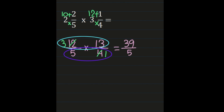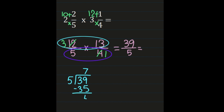So now I'm at 39/5. If you can leave your answer as an improper fraction you are done. Most of us will need to turn this into a mixed number by dividing 39 by 5: 39 divided by 5 is 7, 7 times 5 is 35, and 39 minus 35 gives a remainder of 4. The quotient of 7 becomes our whole number, the remainder 4 becomes our numerator, and the denominator of 5 remains the same. So we get a product of 7 and 4/5.